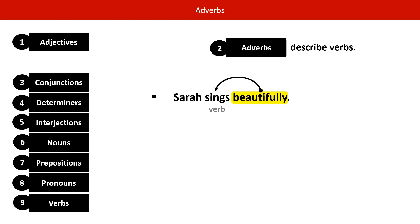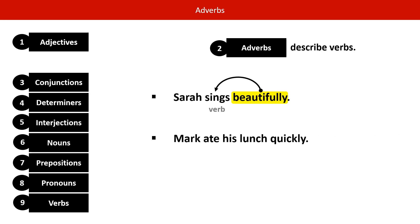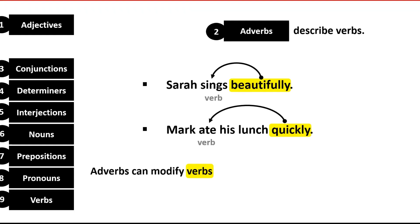Let's do another example: Mark ate his lunch quickly. Ate is the verb and quickly is the adverb — it describes ate to tell us how Mark ate his lunch. In these two examples you can see how adverbs describe verbs, but in grammar we say adverbs modify verbs.